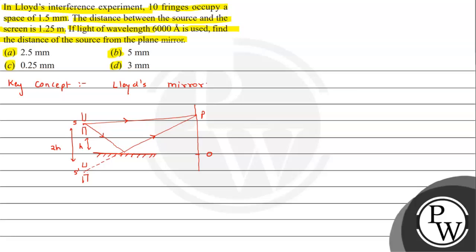So here we have the basic setup. Now let's suppose it is a distance x, so the path difference at point B will be xd upon D — where this is d. This is the path difference. But here, because one wave is reflected in the denser medium, an additional path difference of lambda by 2 will be introduced.